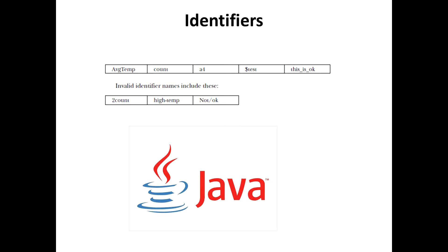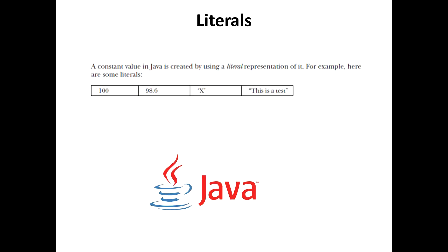Beginning with JDK 8, the use of underscore by itself as an identifier is not recommended, so it is better to avoid that. Next, a constant value in Java is created by using a literal representation of it. For example, literals include 198, 6, and 'x' and 'this is a test'. Left to right, the first literal is an integer, the next is a floating point value, the third is a character constant, and the last is a string.